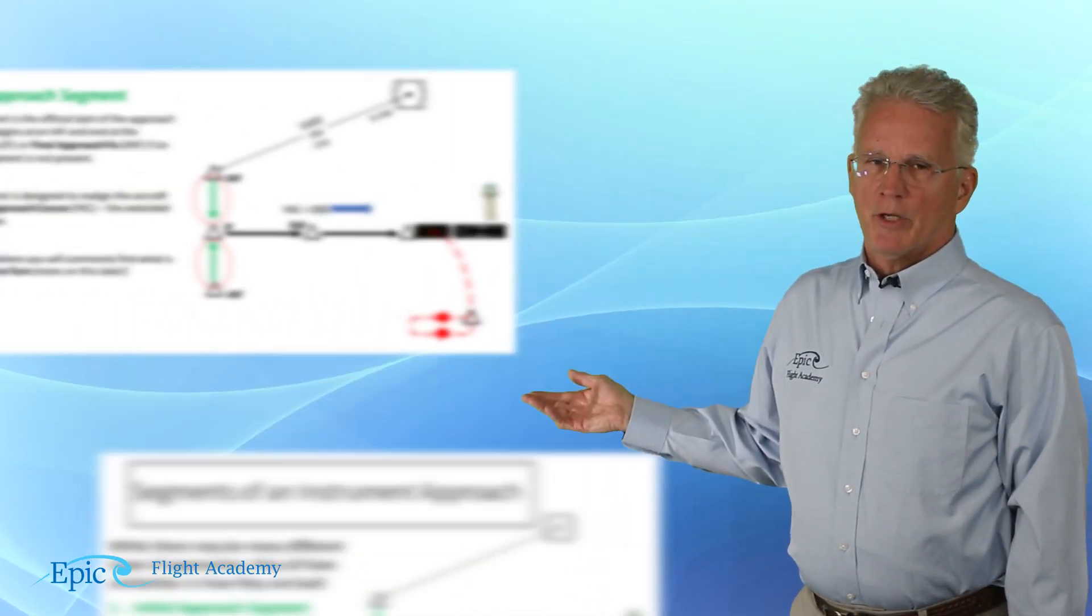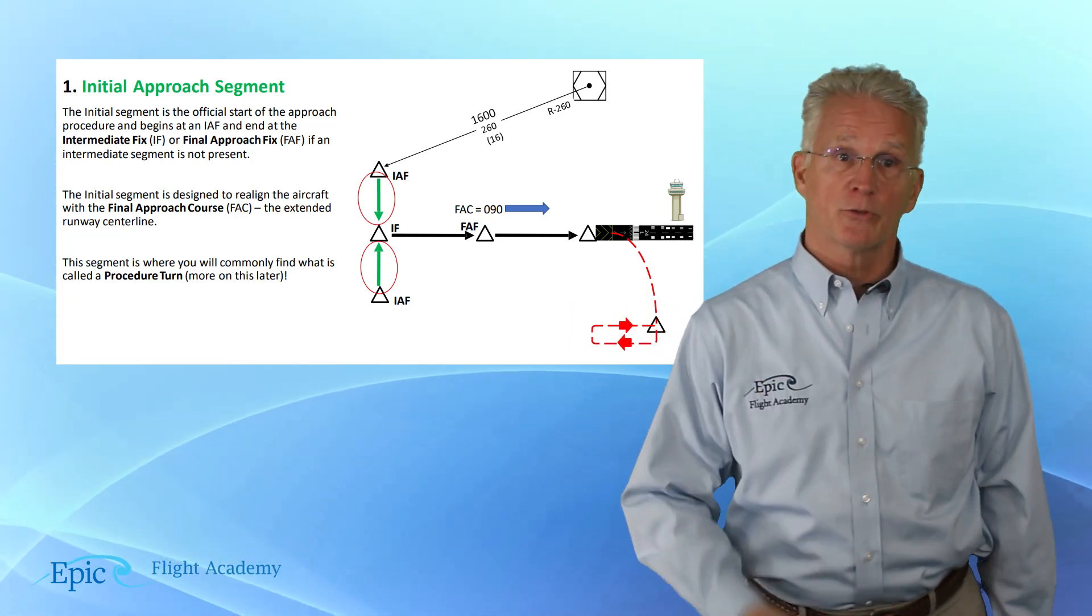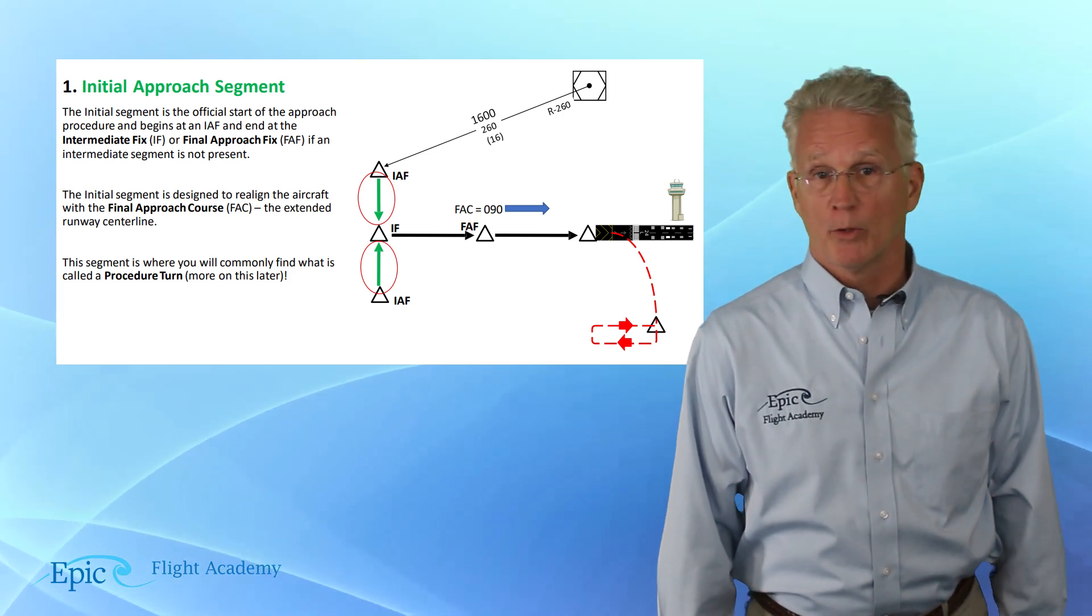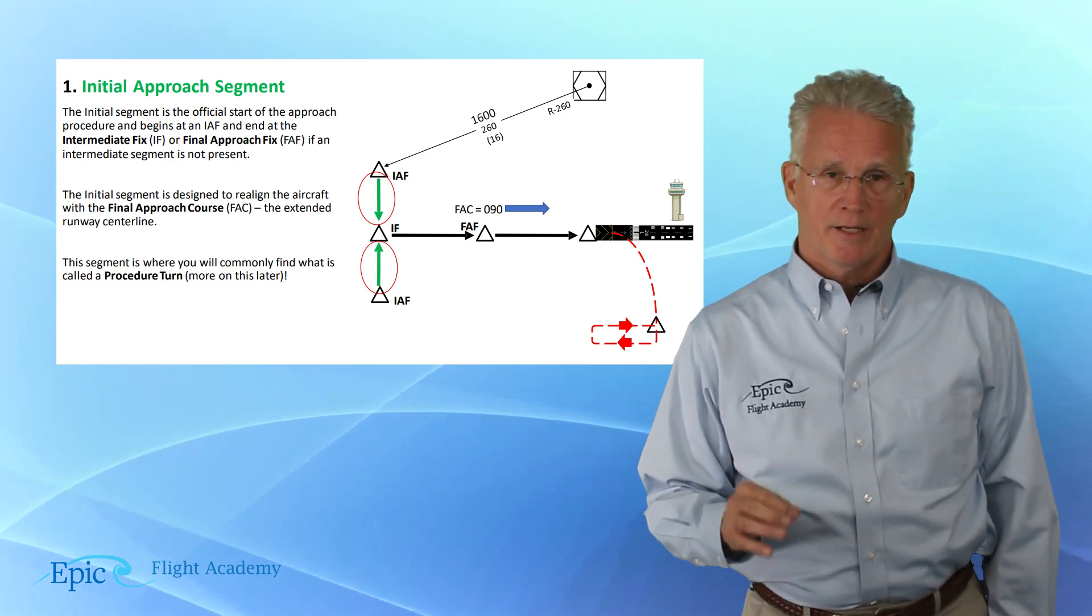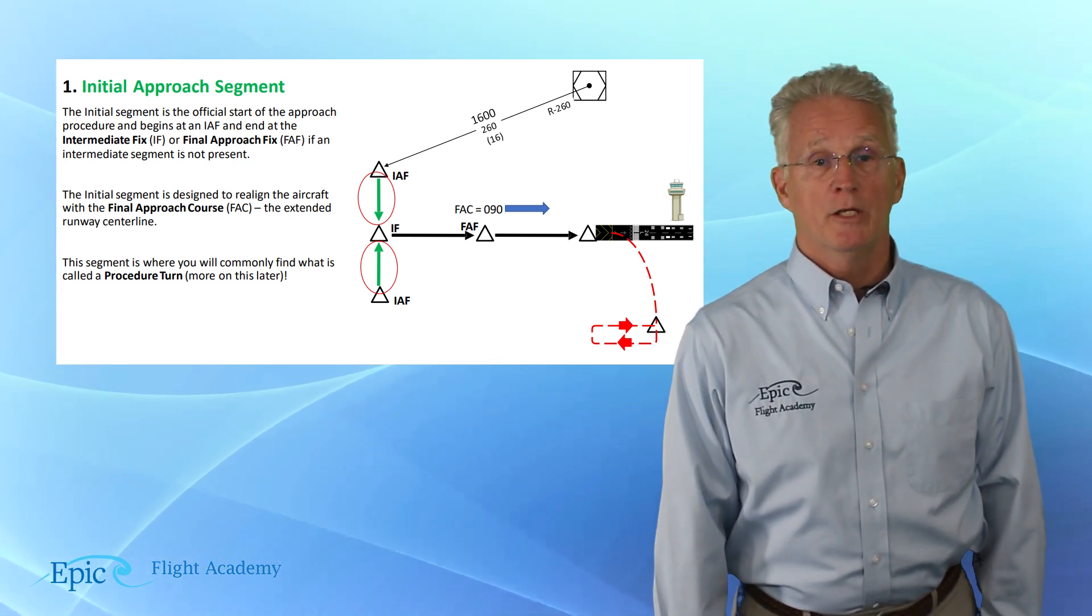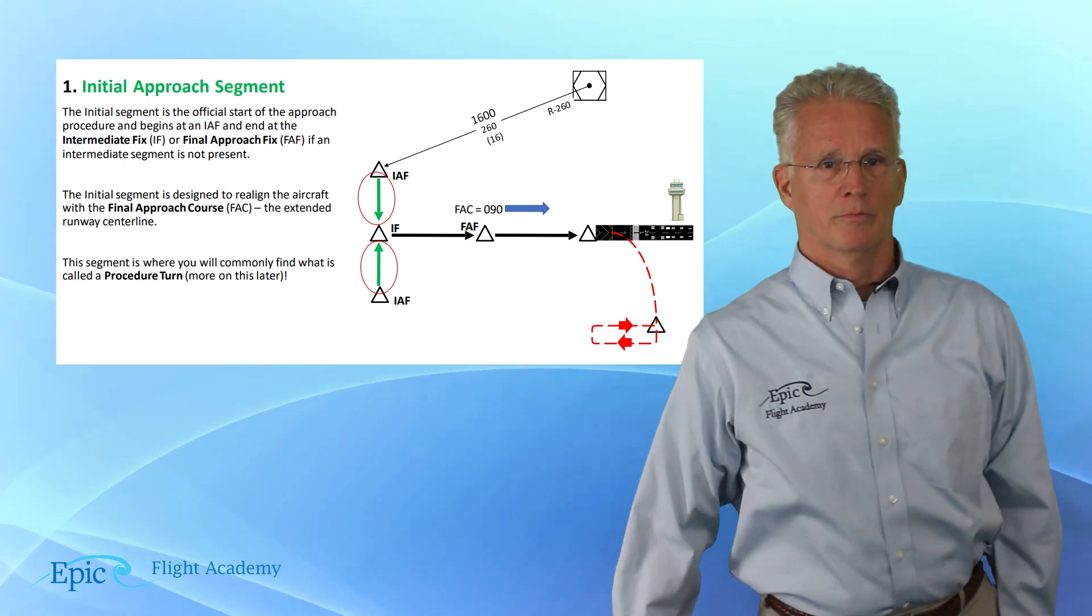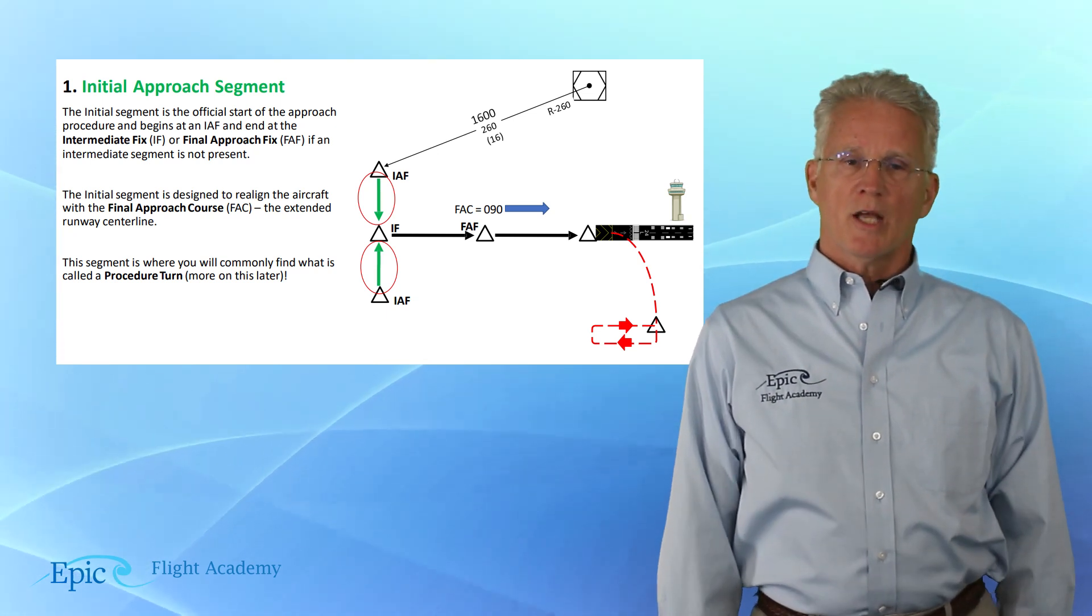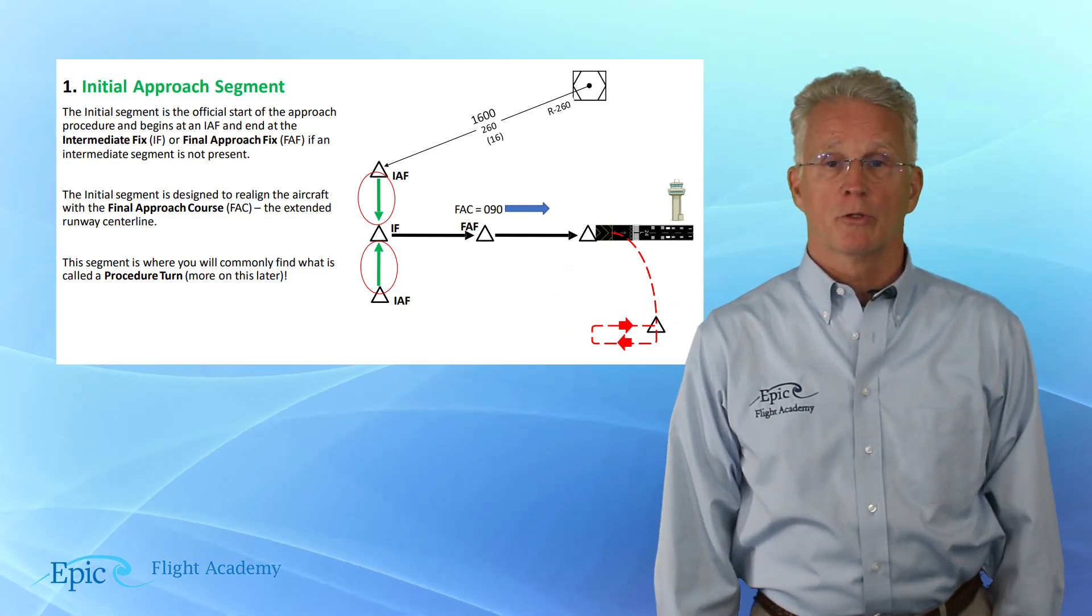If you take a look at our diagram here, we are depicting the initial approach segment in green. This is the official start of the approach. It begins at an IAF or initial approach fix and it ends at the intermediate fix or IF. Now it may end at a final approach fix if the intermediate fix is not used. The initial segment is designed to align the aircraft toward the airport and ideally to line it up with the final approach course. This segment is where you'll commonly find what is called a procedure turn if a procedure turn is required.